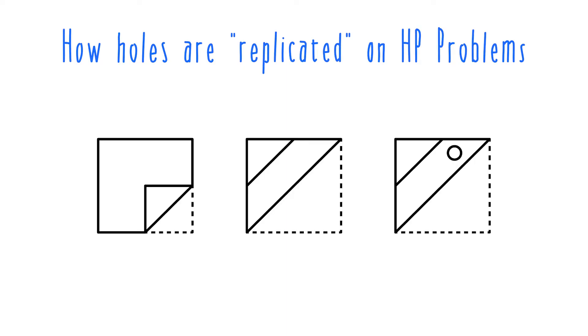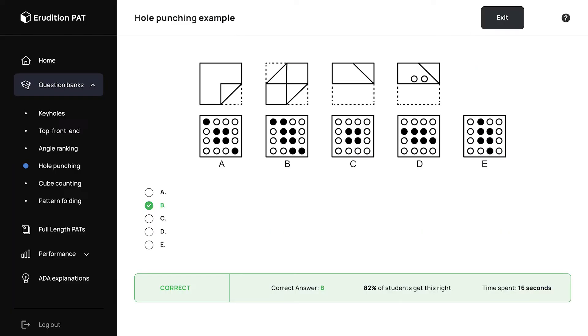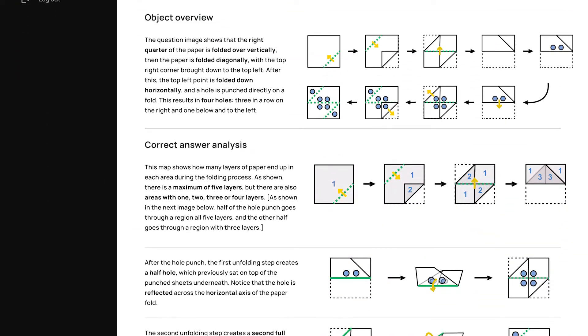So that's kind of the basics of how the problems work, but let's talk briefly about how individual holes are reflected or multiplied throughout the process of a hole punching problem. Generally, when you fold this piece of paper, you end up with multiple layers of paper in certain areas. This map shows how different layers of paper end up in different areas. We always include these maps in our explanations to help you out.